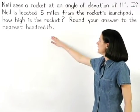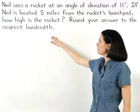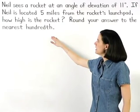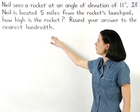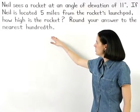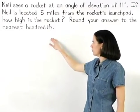Neil sees a rocket at an angle of elevation of 11 degrees. If Neil is located 5 miles from the rocket's launch pad, how high is the rocket? Round your answer to the nearest hundredth.